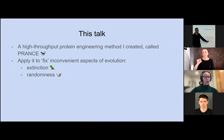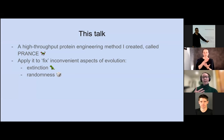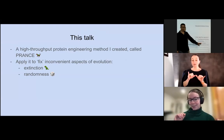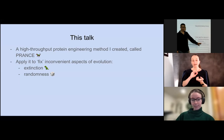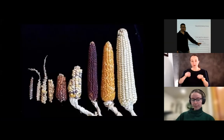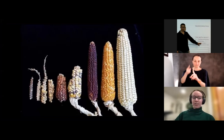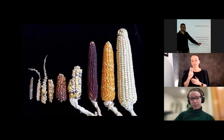Today I'm going to talk about a protein engineering method I created called PRANCE. I'll talk about how I applied this technique to address a few aspects of evolution that actually make it difficult to use for engineering — including that when evolution occurs, sometimes things go extinct, which is not ideal, and also that evolution is a random process, which is not always what we want when we're doing engineering. One challenge is that evolution tends to take a long time — in the corn example, this transformation happened over 6,000 years.